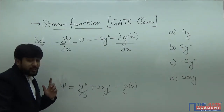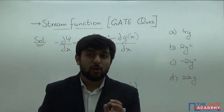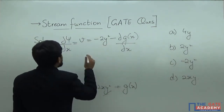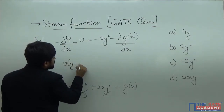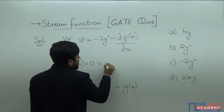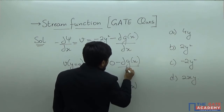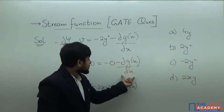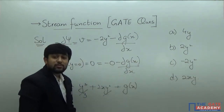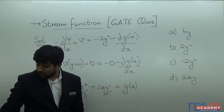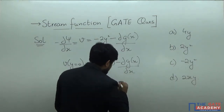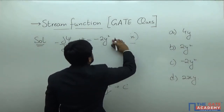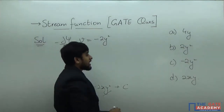They have given us the condition that at y equal to 0, velocity component v equals 0. Substituting y equal to 0: v equals 0 equals minus 0 minus dg(x)/dx. So the partial derivative of g(x) with respect to x is 0, meaning g(x) is a constant. Replacing g(x) with a constant, the final expression for v becomes simply minus 2y². The correct answer is option C.